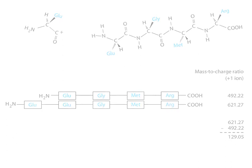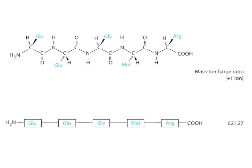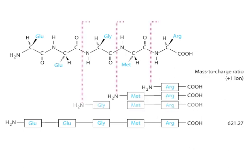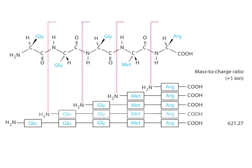The collisions between the precursor ions and the inert gas atoms create a family of product ions. Each product ion represents a fragment of the original peptide with one or more amino acids removed from one end. By comparing the mass-to-charge ratio of these various product ions, the tandem mass spectrometer can determine the entire amino acid sequence of the original peptide.